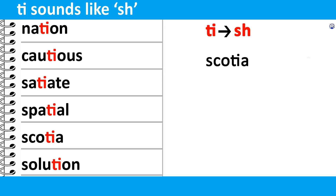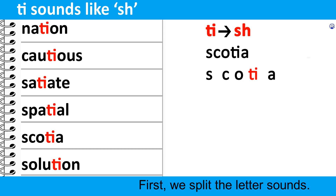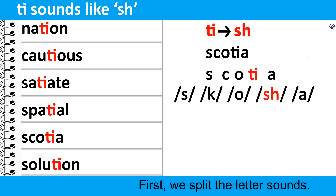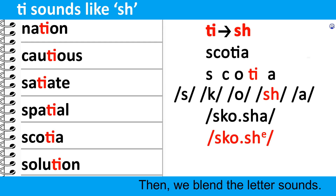Let us illustrate this step-by-step with the example word Scotia. First, we split the letter sounds in the word. Then, we blend the letter sounds together to get the word sound.